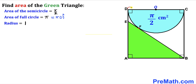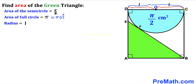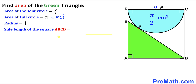We can see that OD and OC are radii of this semicircle, so both equal r = 1 centimeter. Therefore, the total side length CD is 1 + 1 = 2 centimeters. Since all sides of a square are equal, the side length of square ABCD is 2 centimeters across the board.